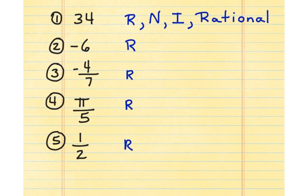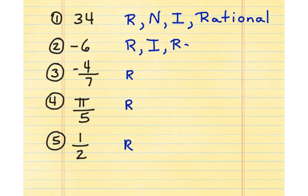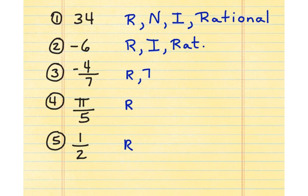Look at negative 6. Negative 6 is a real number. It's not a natural number, though, because it is negative. So it's an integer and it's a rational number. Negative 4/7 is a real number. It's not an integer and it's not a natural number. It is also a rational number, though.